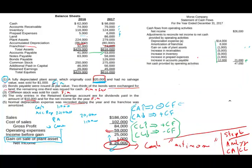Net cash provided by operating activities is $47,000. They made $26,000 in net income, but from a cash perspective they made $47,000 — because they had $14,000 of depreciation, $8,000 of amortization, current assets consumed some cash, but they also used debt to operate their business. We are done with the operating section, which uses the indirect method.